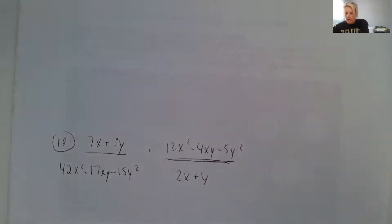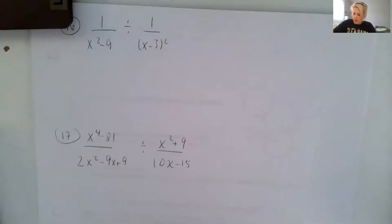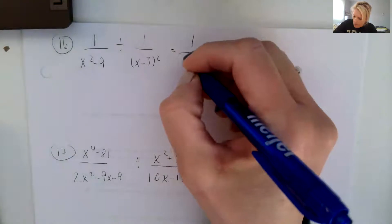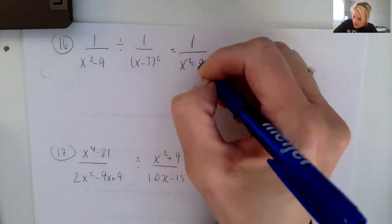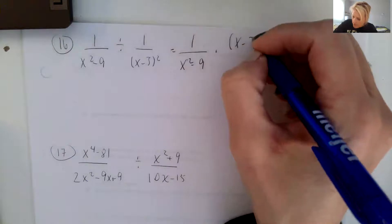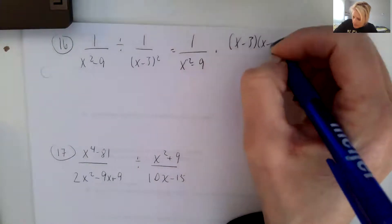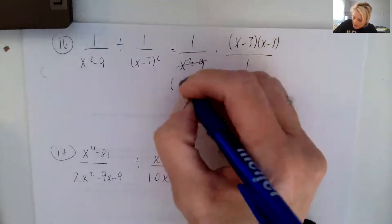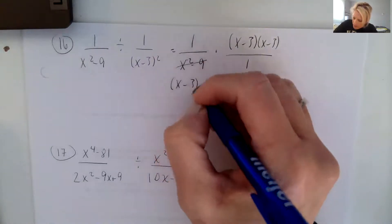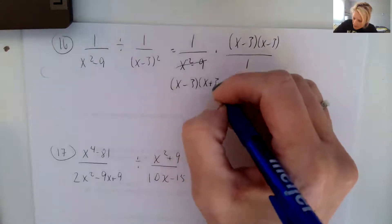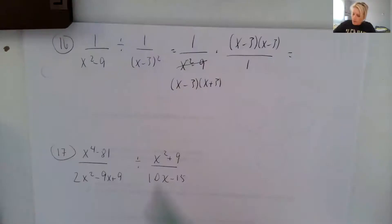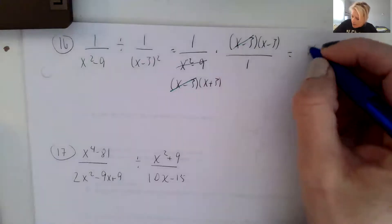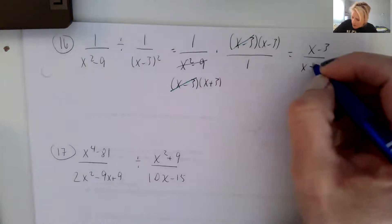Number 16 is another division. So the first one is one over x squared minus nine, times now x plus three times x plus three over one. And the x squared minus nine can factor into x minus three times x plus three. And so the x minus threes cancel and we're left with x minus three over x plus three.